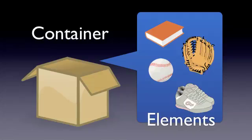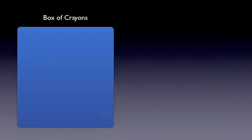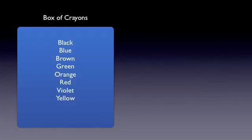An example of a set can be just about anything, such as a box of crayons. In this case, each crayon is an element of the set box of crayons.